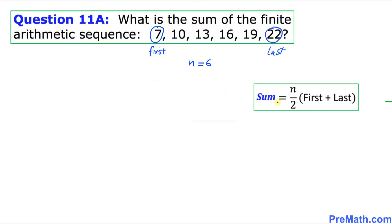Now we're going to be applying this formula. Sum is always equal to n over 2 times first term plus the last term. So in our case, sum of this given arithmetic progression is going to be n over 2, in our case n is 6, divided by 2, times our first term is 7 plus last term is 22.